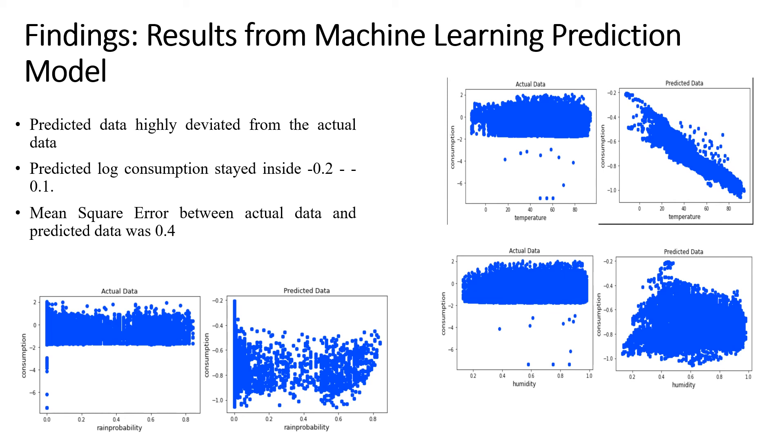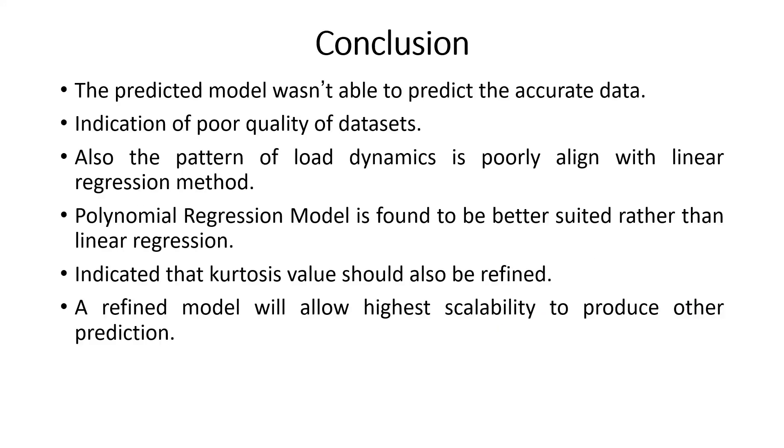And the predicted log consumption range from the negative value of the log consumption target variable. And also we computed the mean square error of the actual data and predicted data and it was found to be 0.4 which was not that satisfactory. So from this research we came to know that the data set was not that of high quality and the method that we used, the linear regression method, is not aligned with the consumption pattern because the pattern of the consumption data of a normal residential house won't justify the requirement of the linear regression model.